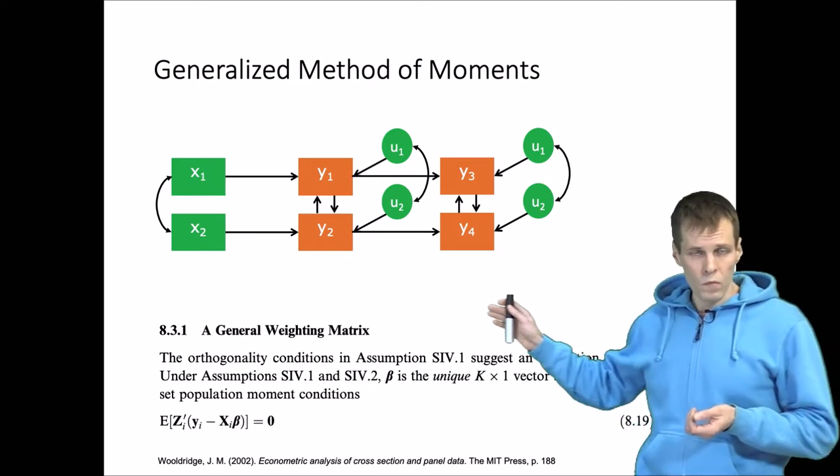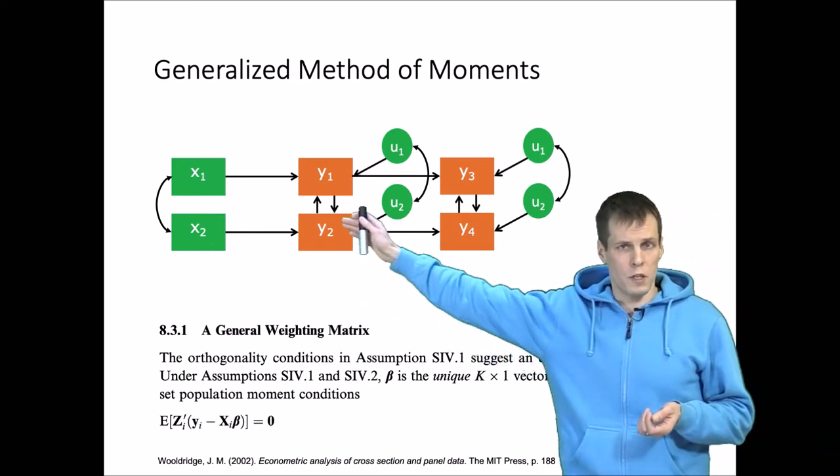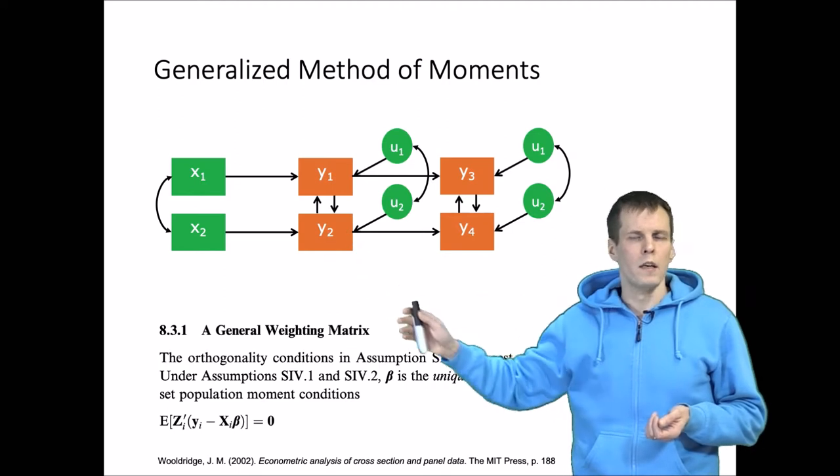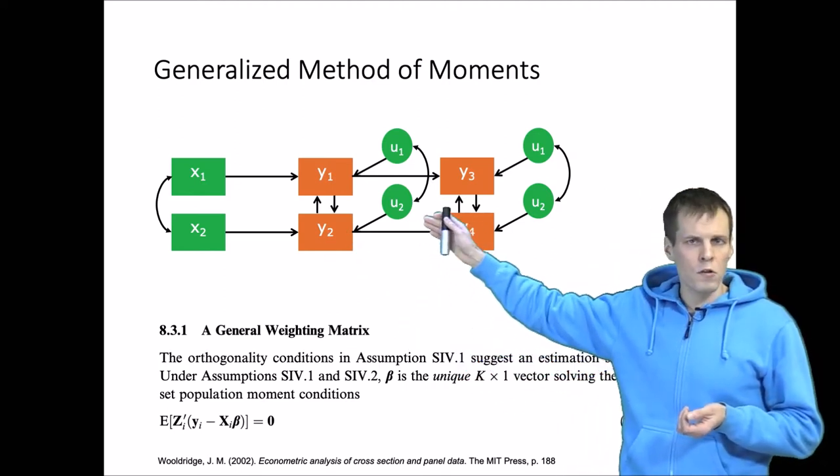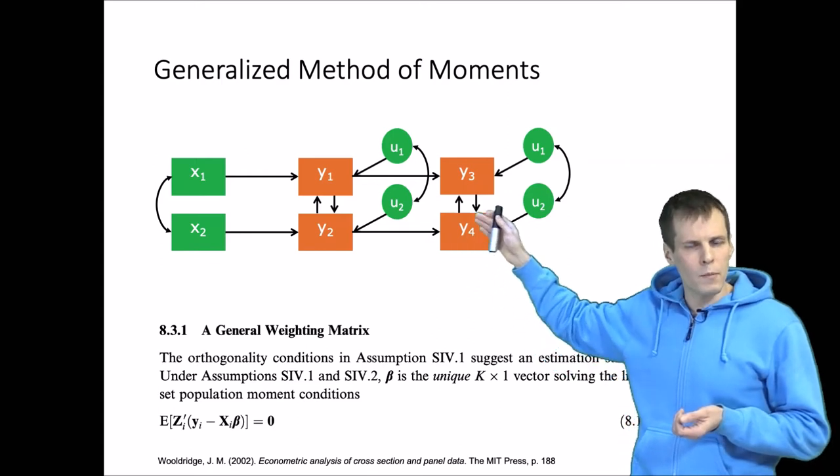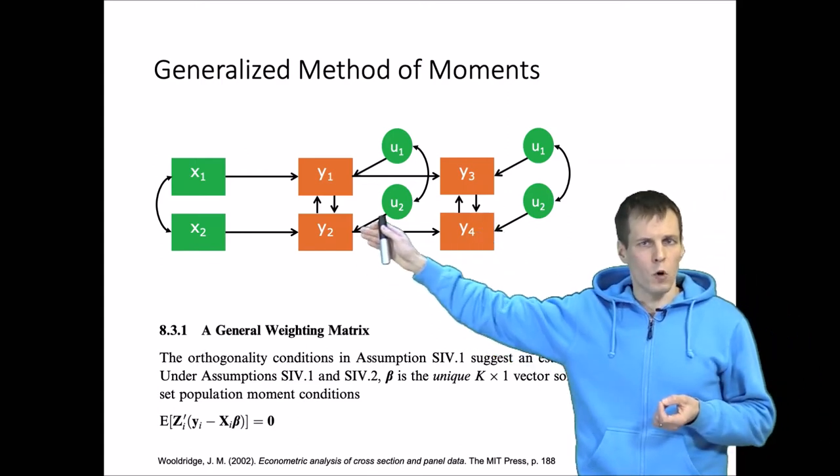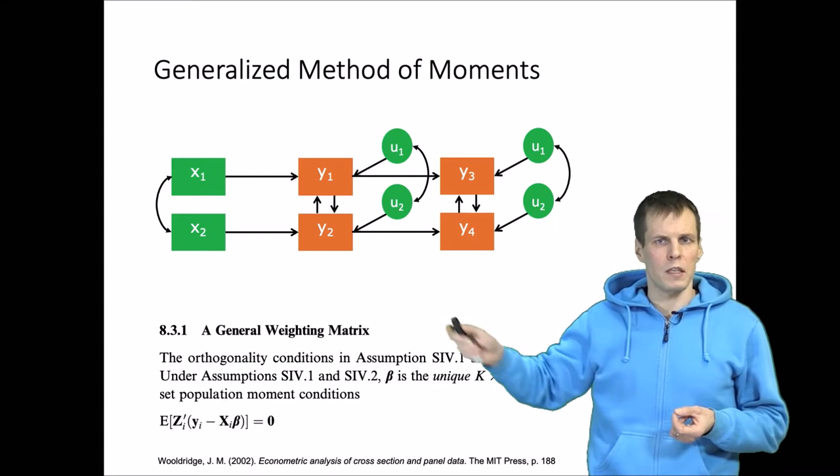We have our exogenous variables that we use as instruments x1 and x3, and then we have endogenous variables that may have correlated errors. There may also be simultaneity between these or two-way relationships between these endogenous variables.